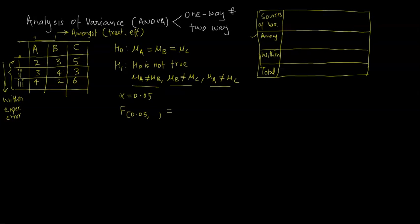I'm going to calculate this variation in two ways. For 'amongst,' we call it SSA — sum of squares amongst. SSW is sum of squares within. Then I calculate degrees of freedom, then mean sum of squares: MSA (mean sum of squares amongst) and MSW (mean sum of squares within). Finally, I calculate the F ratio, which is MSA divided by MSW, and use that to determine results.